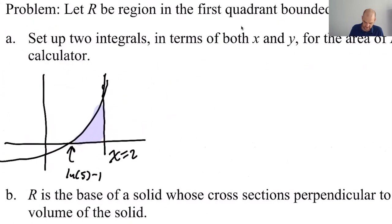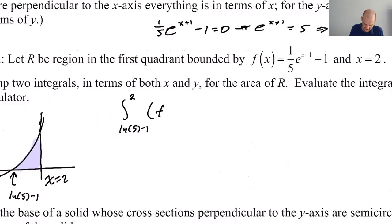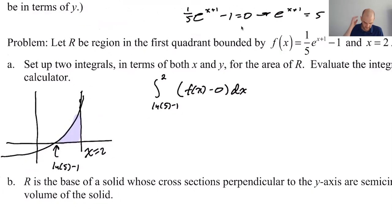All right. So I could do, for area, right? So I can do the integral from the natural log of 5 minus 1 to 2 of the top curve is just f of x. So we use names. And then the bottom curve is 0 and dx. All right.